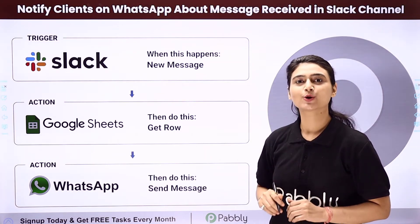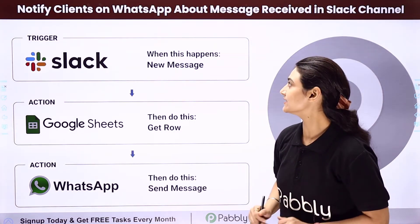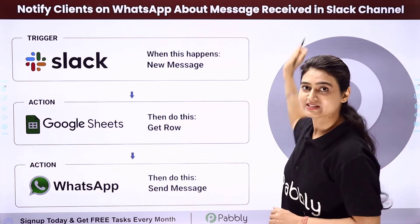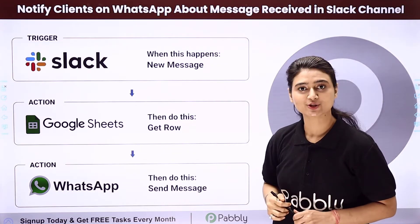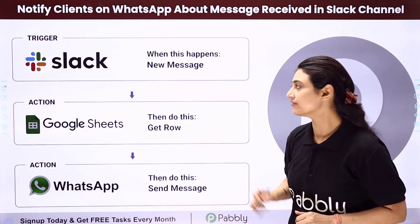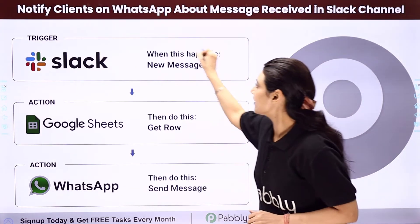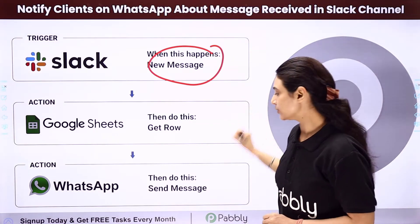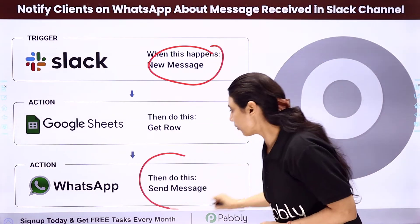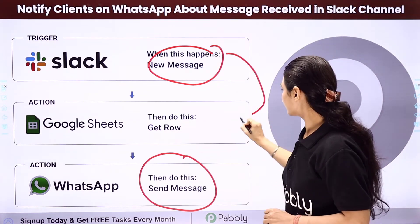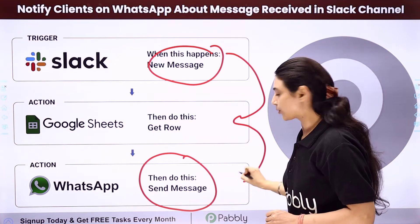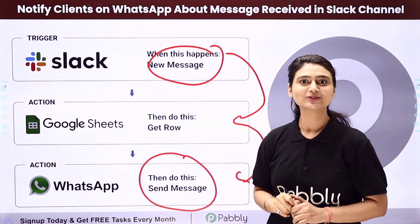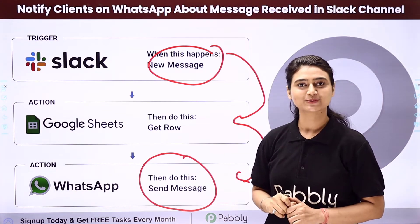In this video we will learn how you can automatically notify clients on WhatsApp about messages received in a Slack channel. Every time you send a message in a Slack channel, the client should be notified on WhatsApp. We are going to automate this entire process using Pabbly Connect.